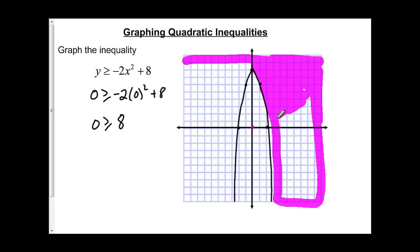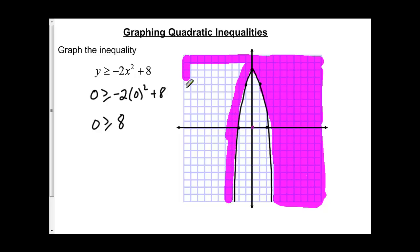So everything outside of my parabola, everything in the purple would satisfy the equation. So if I picked any value over here, let's say I picked the value x is 8, y is 7. That is in the shaded region, so it would satisfy the equation y is greater than or equal to negative 2x squared plus 8.